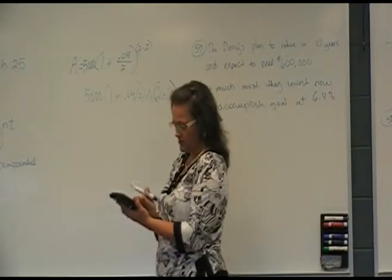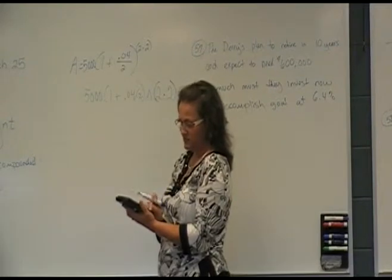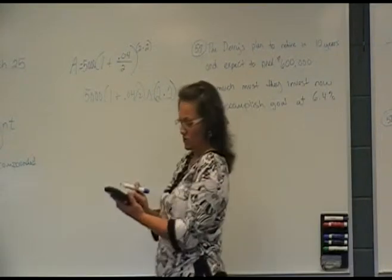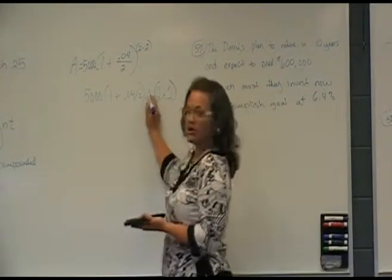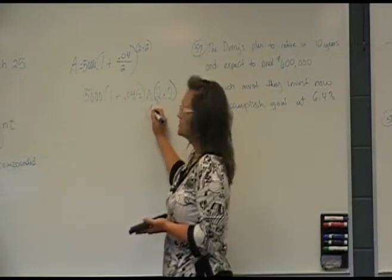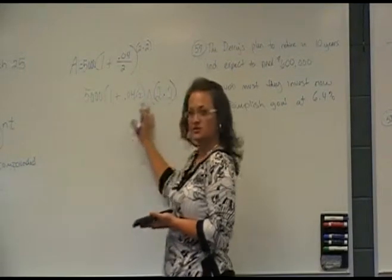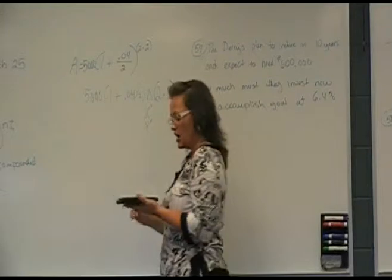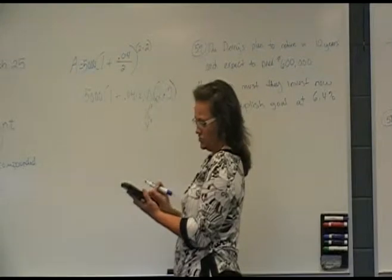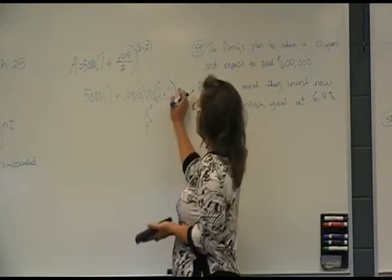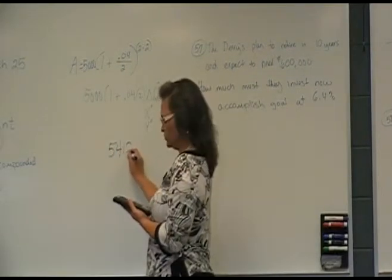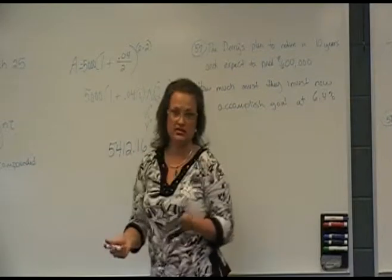All right. So punch that in your calculator, directly say 5,000 parentheses 1 plus .04 divided by 2, close your parentheses. Then to get this little up arrow button, some calculators have a key that looks like that. Some of you have an X to the Y button or a Y to the X button. Something that tells you it's superscriptive, it's an exponent. So hit your exponent button, and then parentheses again, 2 times 2, and close that parentheses at the end, then equals. So you should get $5,412.16 to the nearest cent.